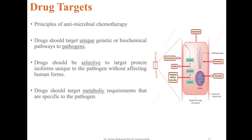This slide is a reminder of the principles of antimicrobial chemotherapy. As with drugs that target other microorganisms, the principles remain the same. We want drugs that target unique genetic or biochemical pathways unique to the pathogens, or that are selective to target protein isoforms unique to the pathogen without affecting human versions, or that target metabolic requirements specific to the needs of the pathogen. It is important to consider structures or pathways unique to fungi that would not harm human cells.